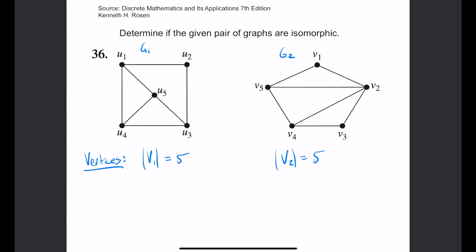Now we want to check the edges of both graphs. An edge is the line that connects two vertices. On graph 1 we have 1, 2, 3, 4, 5, 6, 7 edges. Graph 2 also has 1, 2, 3, 4, 5, 6, 7 edges.